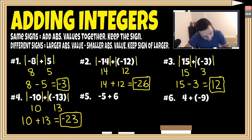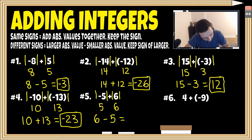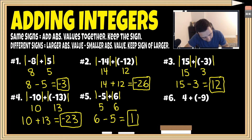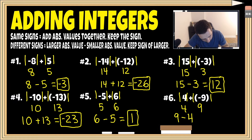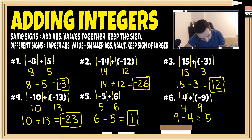For number five, we have different signs. The absolute value of negative five is five, and the absolute value of six is six. Since we have different signs, take the larger absolute value minus the smaller one: six minus five is one. Six was positive, so the answer is positive one. For number six, we also have different signs. The absolute value of four is four, and the absolute value of negative nine is nine. Nine minus four is five. Nine was originally negative, so the final answer is negative five.